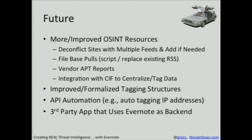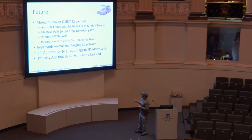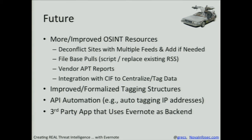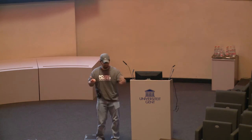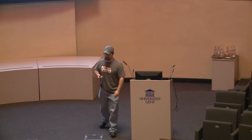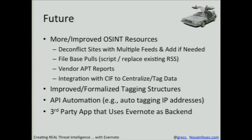Some future ideas I'm having: most of this is focused on trying to do more interesting things with OSINT through scripting and automation. Some interesting ideas are API automation — you could create an app that goes into Evernote, looks for IPs, and auto-tags those as an example. There are a lot of third-party apps, like a diary app that uses Evernote as its backend database. You could come up with a third-party app that looks like an incident response tool but just uses Evernote as the backend.